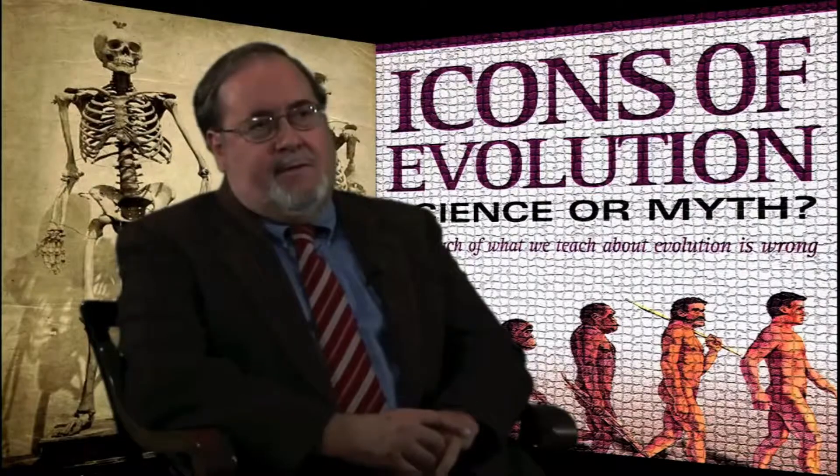So homology is at the heart of the evidence for Darwinian theory — that is, descent with modification from a common ancestor. One problem with the reliance on homology as evidence for Darwin's theory is that we have some things that appear to be homologous but which we know or believe do not come from a common ancestor.